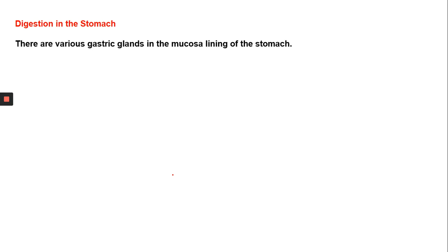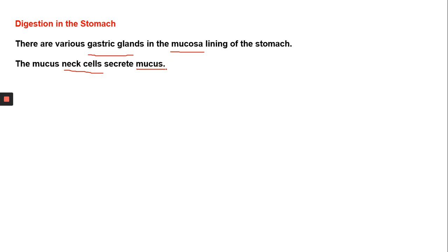When food goes into the stomach, digestion in the stomach begins. The stomach is a J-shaped organ containing various gastric glands. The innermost layer of the stomach is called the mucosa lining, and the neck cells present there secrete mucus. An important point is that the stomach contains highly acidic hydrochloric acid, making the environment highly acidic with a pH of 1. The mucus protects the stomach from this acidic environment.